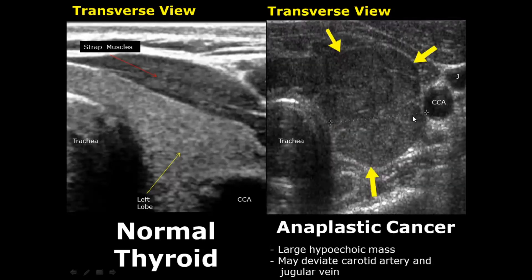Anaplastic cancers are larger in size, which helps differentiate them from other cancers. They appear hypoechoic and can also deviate the common carotid artery and the internal jugular vein.